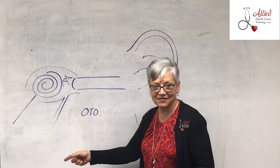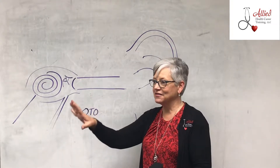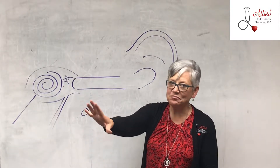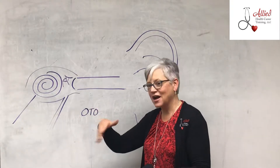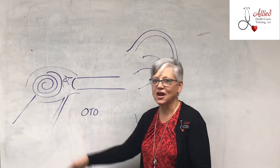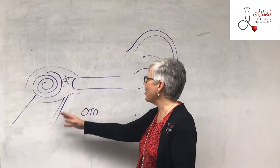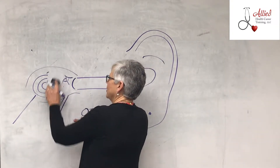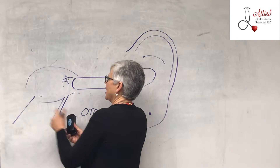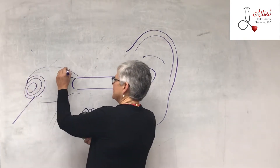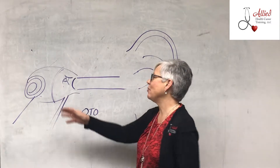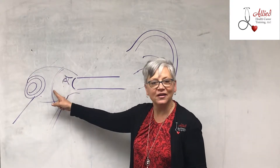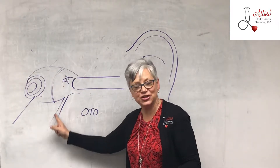The next one, which is the most common, is otitis media. Oto means ear, itis means inflammation or infection, and media means middle. So otitis media is when you have a middle ear infection — this is by far the most common. In the middle part of the ear you have these little bones, and this is the inner ear here. Here's the middle ear, the middle part.